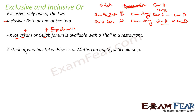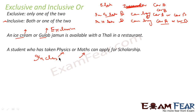But consider another example: a student who has taken physics or maths can apply for a program. Here, both can also apply — a person who has taken physics can apply, a person who has taken maths can apply, and a person who has taken both physics and maths can also apply. So this is an example of an inclusive statement.